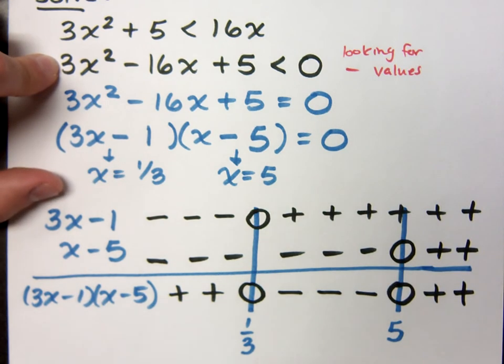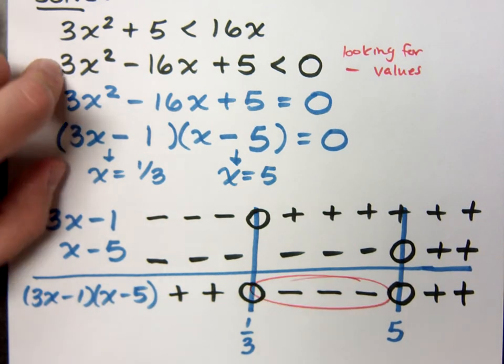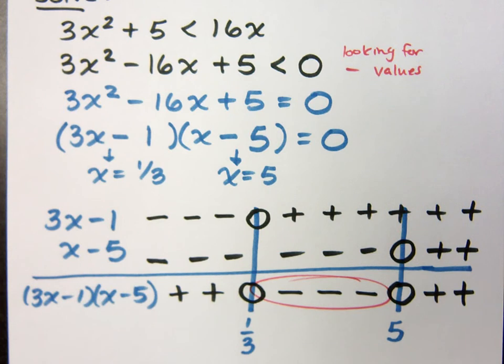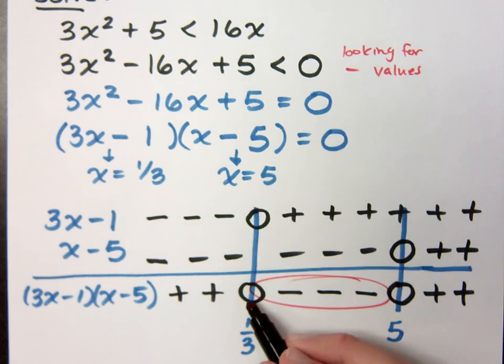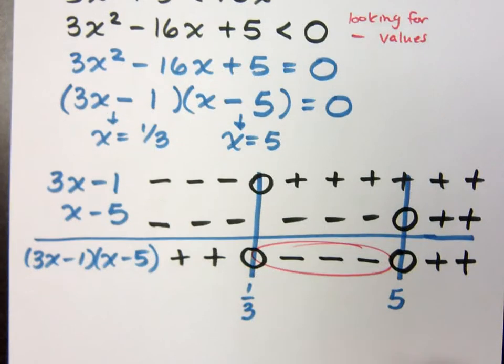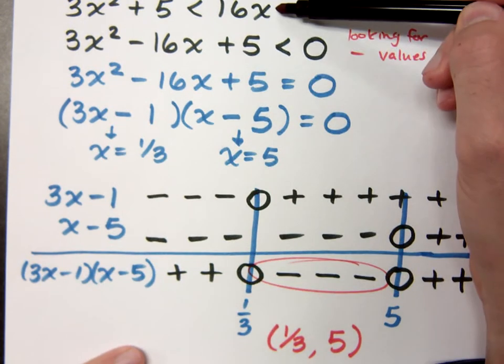So my negative values happen right here. That's where my negative values are. Now notice that I'm less than but not equal to, so I don't get to include these endpoints. So my interval that is my solution set will be from 1/3 to 5 with parentheses. That means anything that's in between 1/3 and 5 will be a solution to my original inequality.